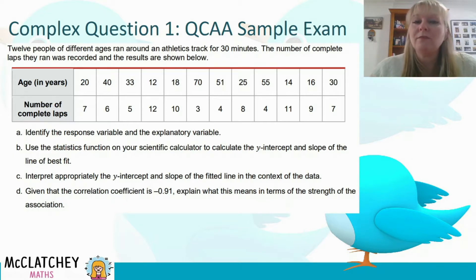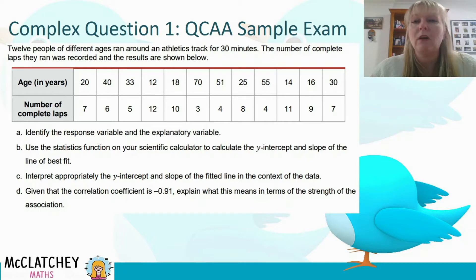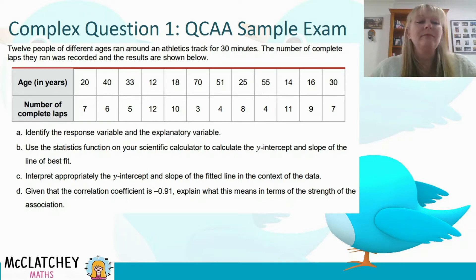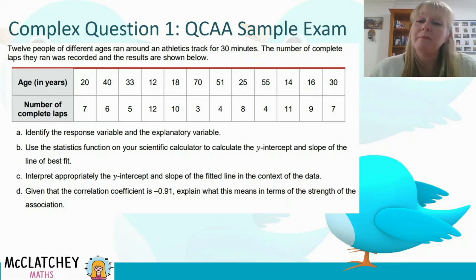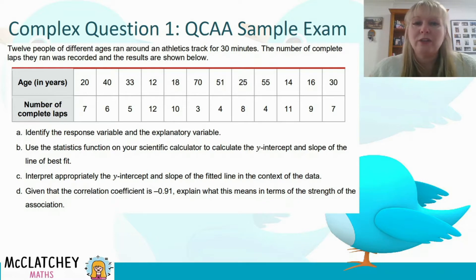Firstly, you need to identify the response variable and the explanatory variable. Secondly, you need to use the statistics function on your calculator to calculate the y-intercept and the slope of the line of best fit. Then you need to interpret the y-intercept and the slope of the fitted line in the context of the data. And then D, given the correlation coefficient is negative 0.91, explain what that means in terms of the strength of the association. So I'm going to unpack this little by little, one question at a time.